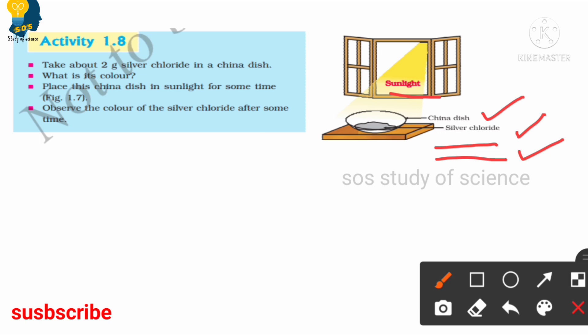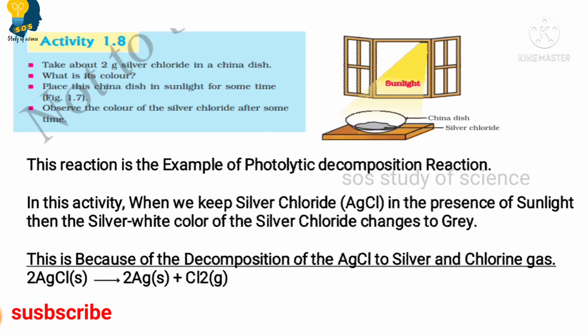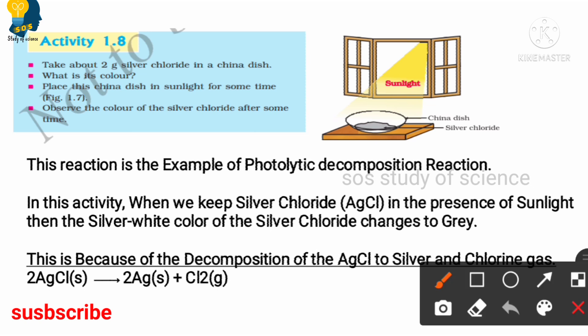Very importantly, you need to understand. See what happens to silver chloride when we keep it under the sunlight? When we keep the silver chloride under the sunlight, this silver chloride undergoes decomposition reaction. As a result of it, it will form silver and chlorine.